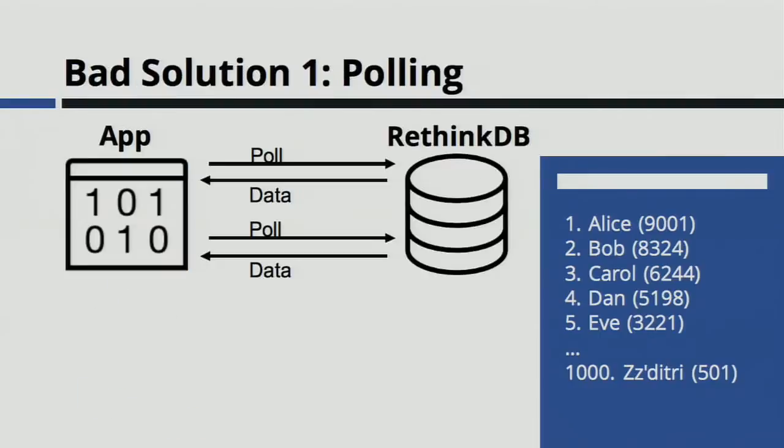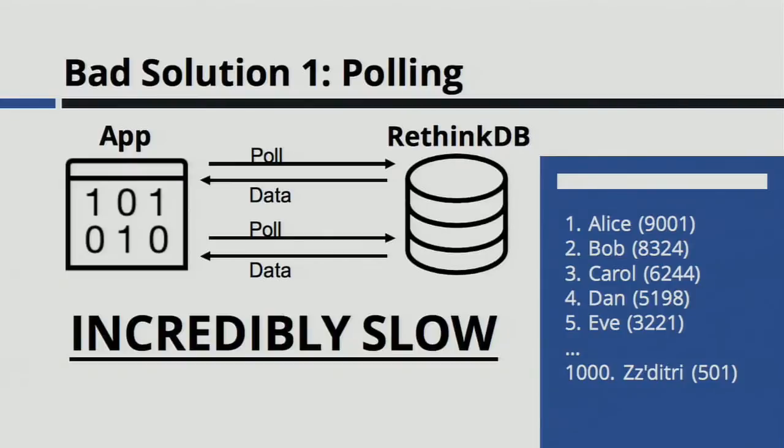Now let's say instead of just displaying that statically, you wanted this to update live so that if new people are entering the top 1,000, you'll update it in people's web browsers. The first thing most people would try is polling — your app would get the first 1,000 users, display it, wait a tenth of a second, go get it again, display the new set, and just do this in a loop. This has the advantage that it's really easy — you just take the query you've already written, put it in a while loop with a sleep. But the downside is you're pulling 1,000 rows over the network every tenth of a second for every open page, which is incredibly slow and very quickly stops working.